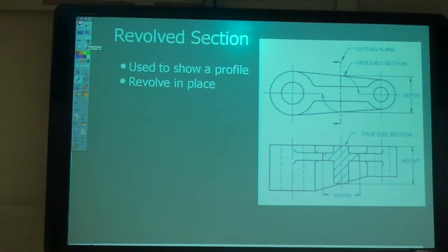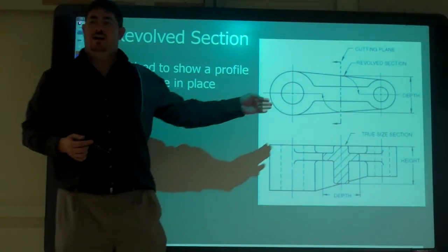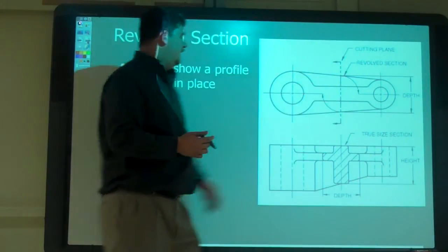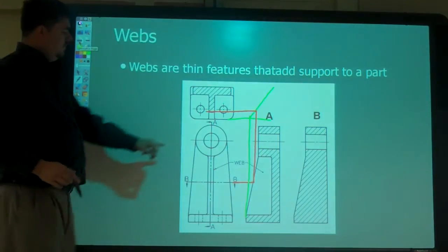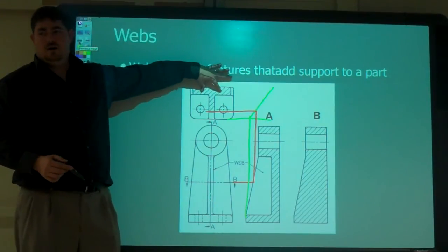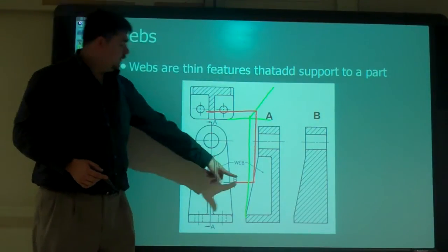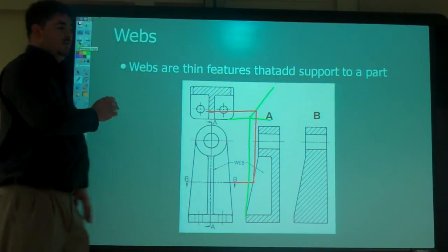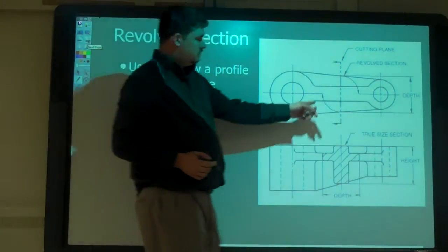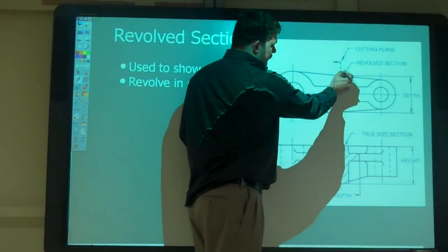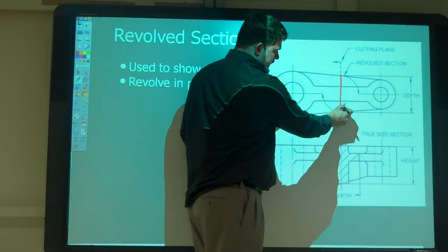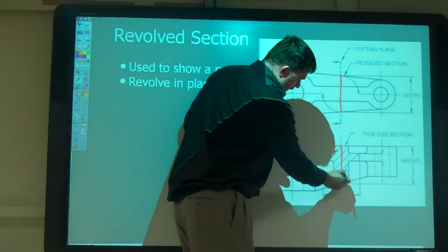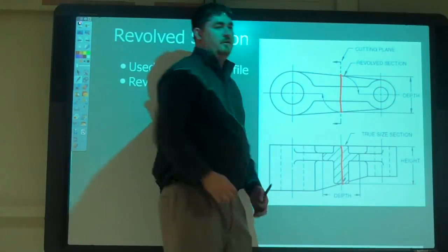So our revolved section, it's kind of like what we've done already with full sections. But now instead of cutting it and doing it on another view, we're going to cut it and just kind of flip it over right where it is. So in this example, they cut right here. That's where they cut it. That's where they cut it right here. And then they just rotated it 90 degrees.